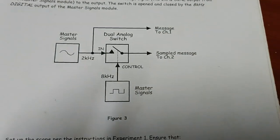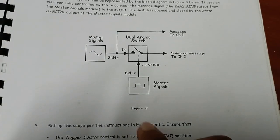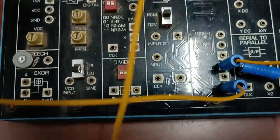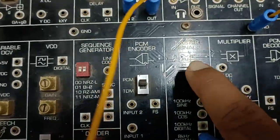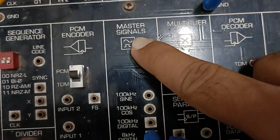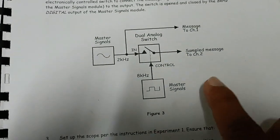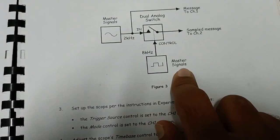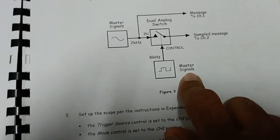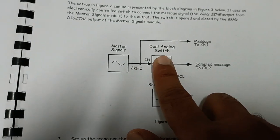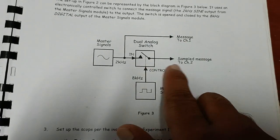This is the block diagram of our first experiment. There is a master signal block, and in the kit the master signal block takes two inputs: one is a 2 kilohertz sine wave and the second is an 8 kilohertz digital signal. This is given to a dual analog switch, and then we take the message signal and the sample signal.